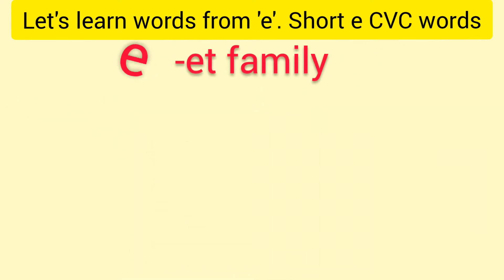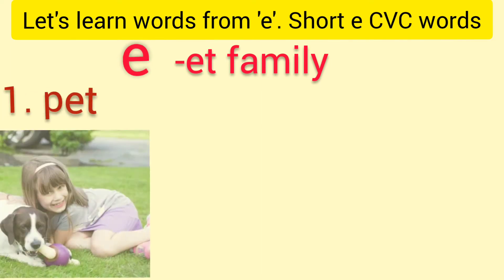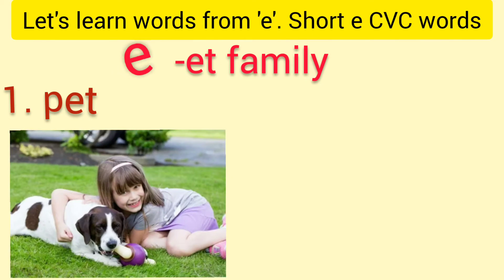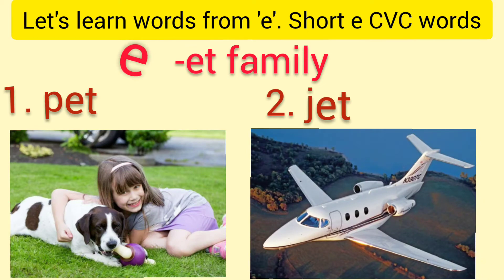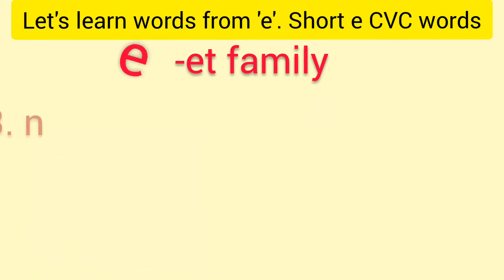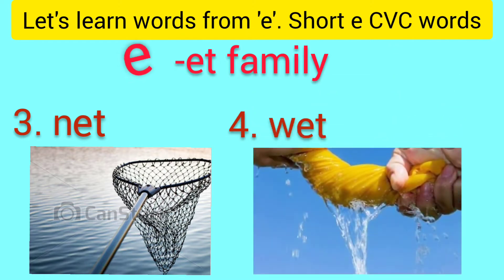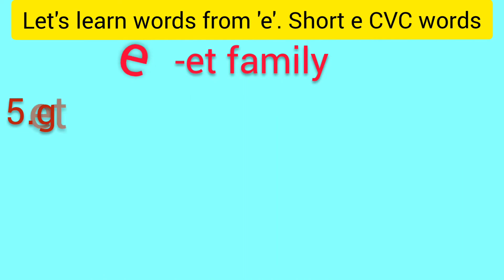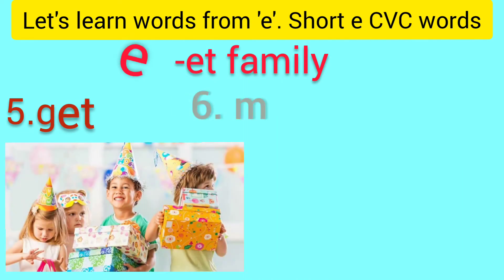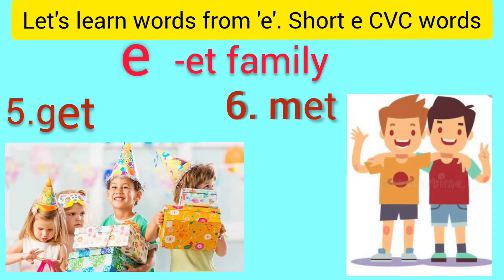Next is the ET family words. Number one is B-E-T: bet. Number two is J-E-T: jet. Number three is N-E-T: net. Number four is W-E-T: wet. Look at this wet cloth. Number five is G-E-T: get. Number six is M-E-T: met.